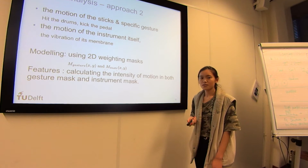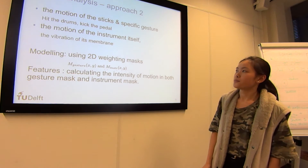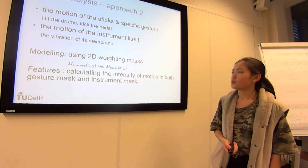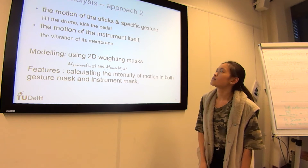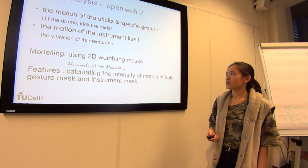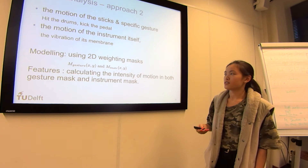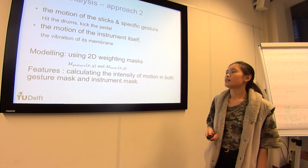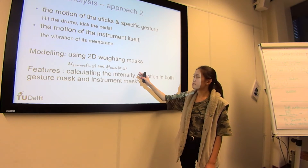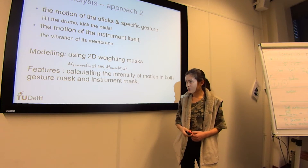There is also another approach which defines a 2D model with two motion masks — one representing the motion of the sticks and gestures, and another representing the motion of the instruments themselves. By calculating the intensity of these two types of motion, we can extract useful features.